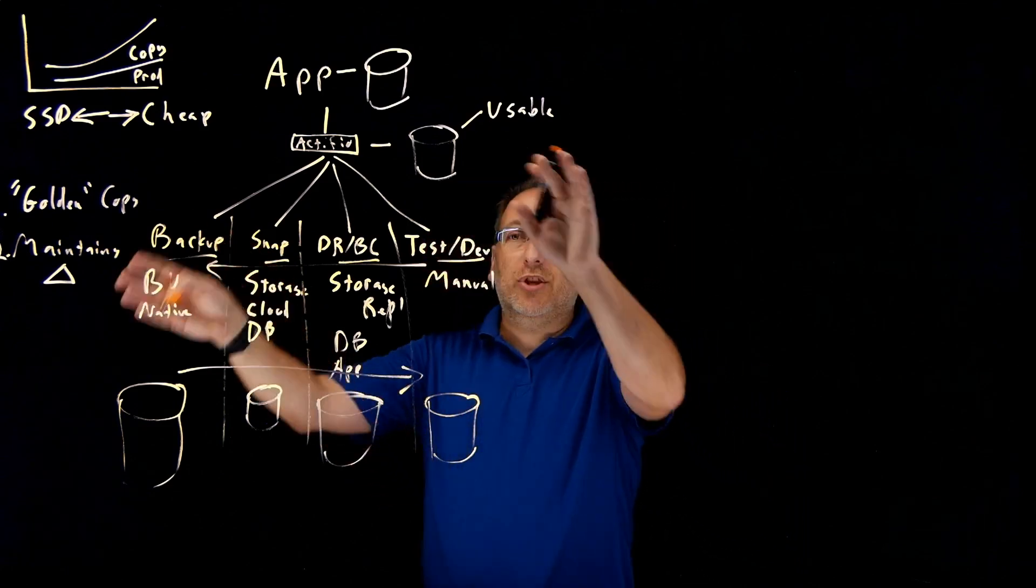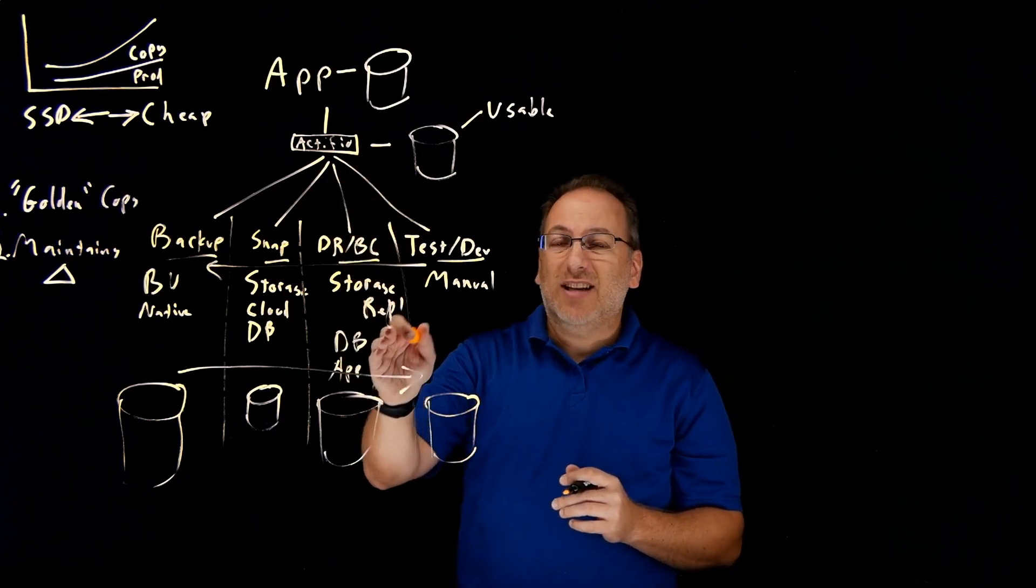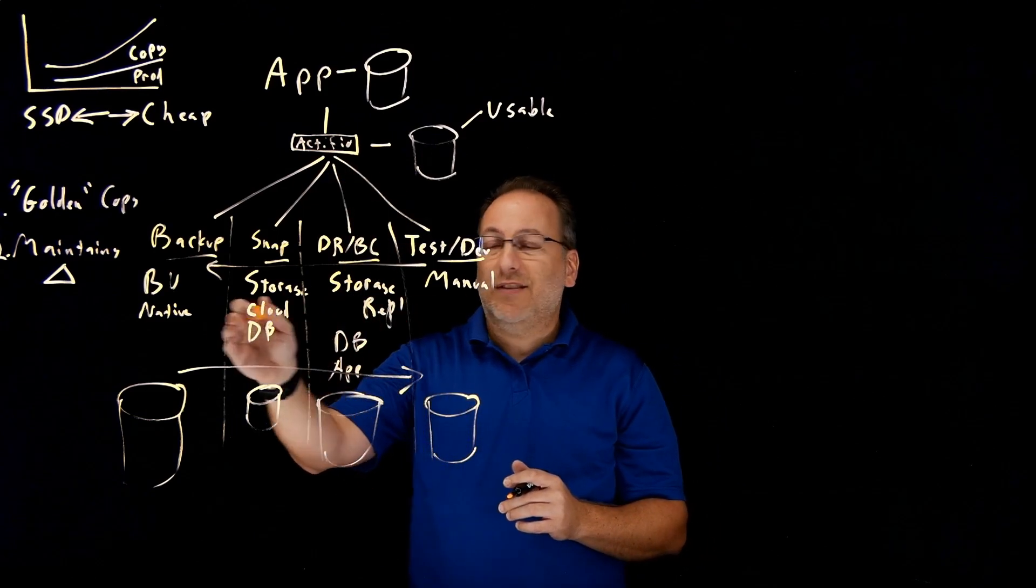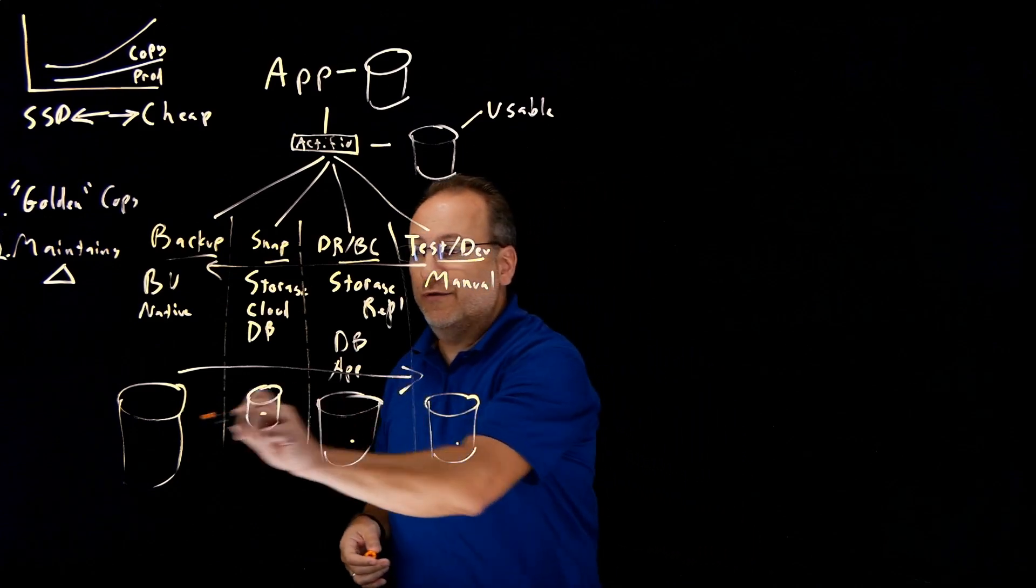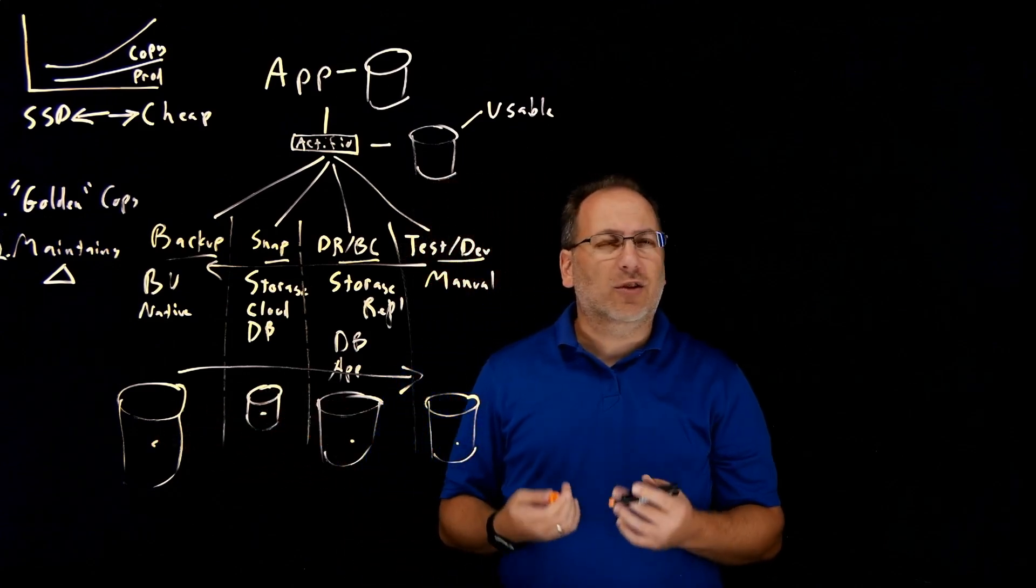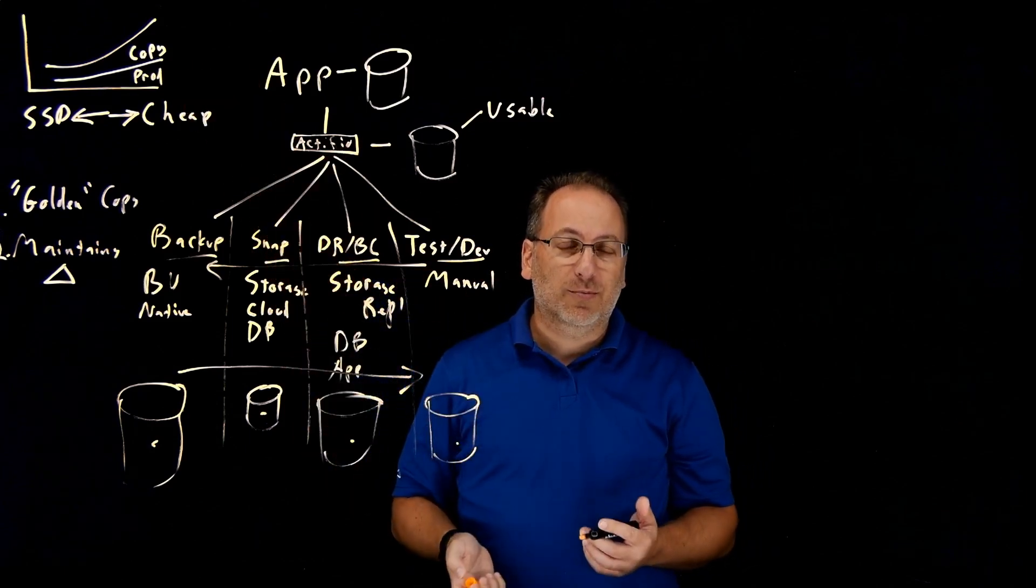Now, when you put this all together, the result is you have a solution that allows you to consolidate tools. Instead of having separate tools for every type of copy, you now can have one. It also consolidates your storage footprint. So it drives a lot of efficiency and really starts to solve the copy data problem and the storage explosion.